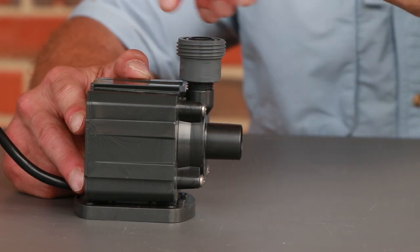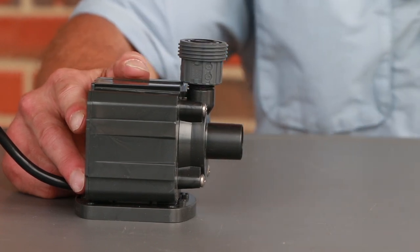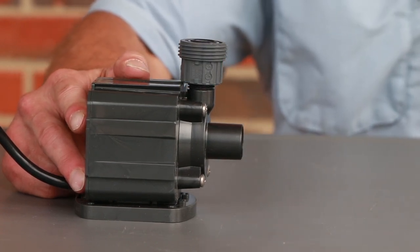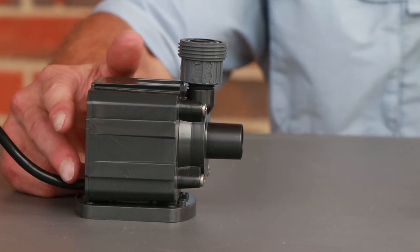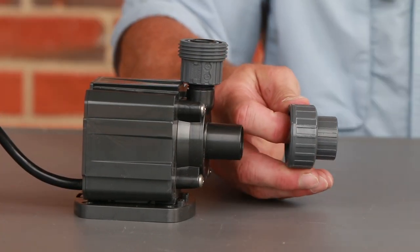Attach one half of the half inch union fitting to the one half inch outlet of the pump. Using a union fitting next to the pump makes it easy to remove the pump for any maintenance that might be required.